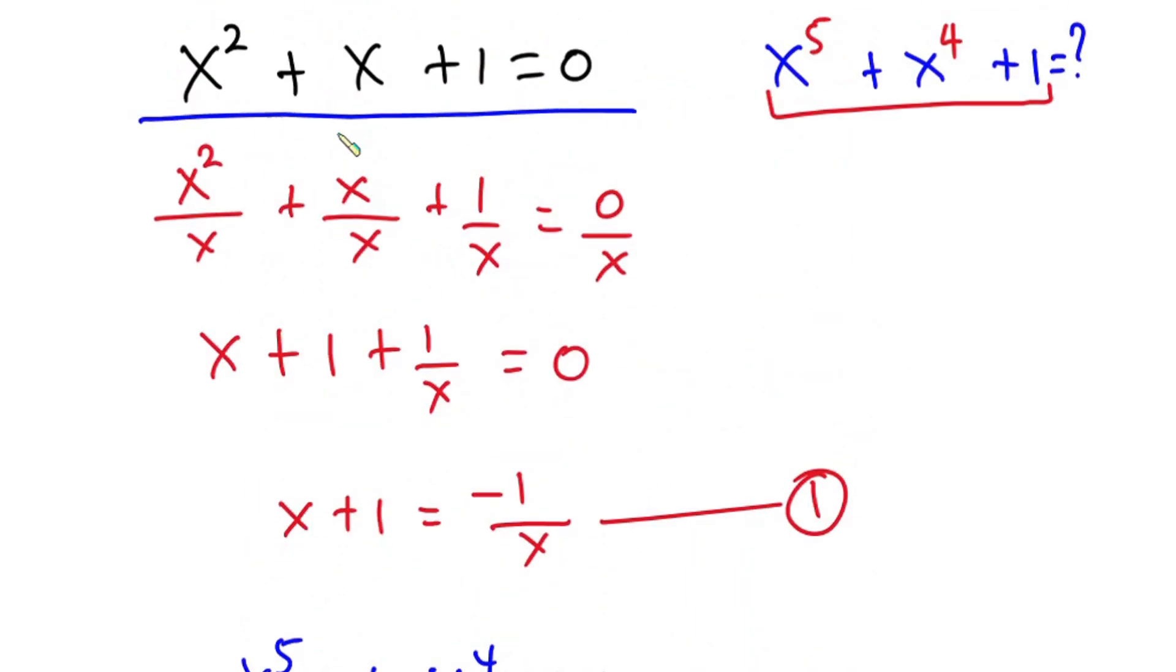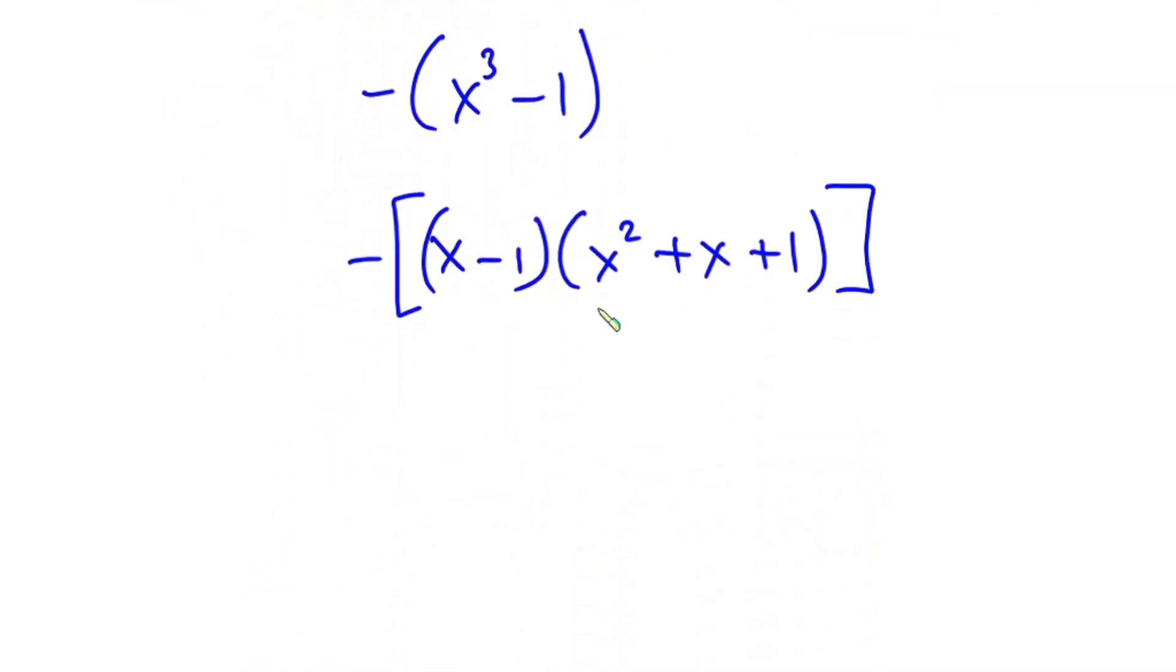Now considering this equation, we have x to the second power plus x plus 1 is equal to 0. So it means that this whole thing, I'm gonna put 0. So we have negative into x minus 1 times 0, and 0 times any number is still 0.